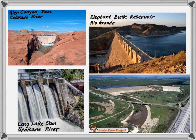Elephant Butte Reservoir, located in New Mexico, falls along the Rio Grande River. It was built in 1916 to provide power and irrigation to southern and central New Mexico and western Texas. It holds 2 million acre-feet of water. The outlet structure of Long Lake Dam, located on the Spokane River, provides an example of how dams are controlled. The gates shown can be opened or closed as needed to ensure downstream water supply and make sure that the upstream reservoir does not overtop the dam.